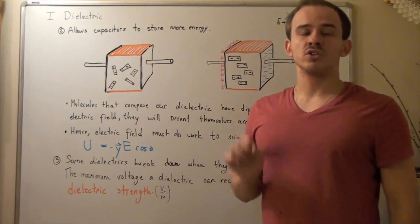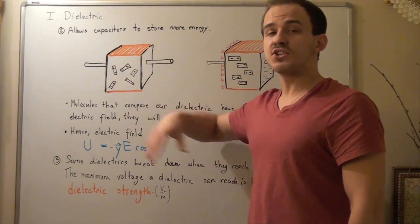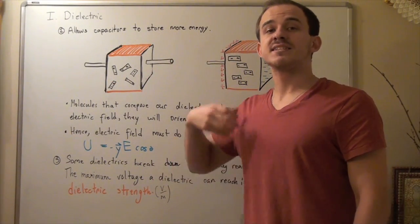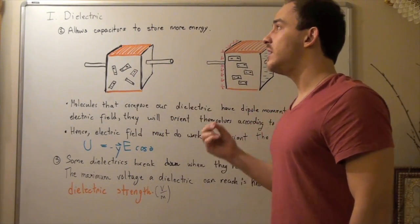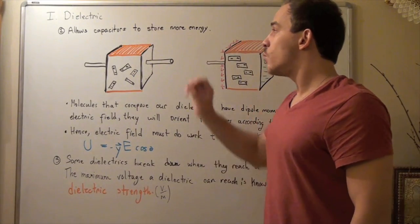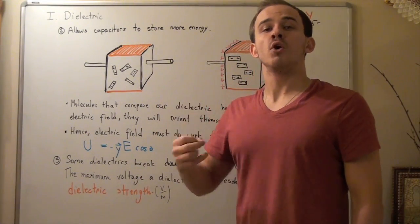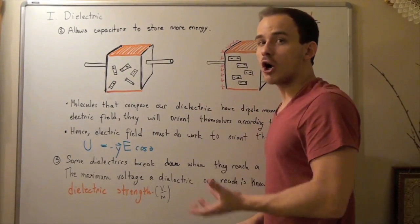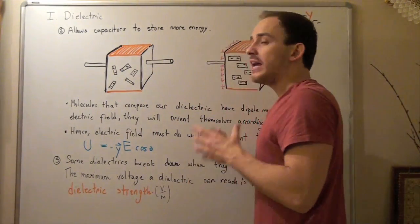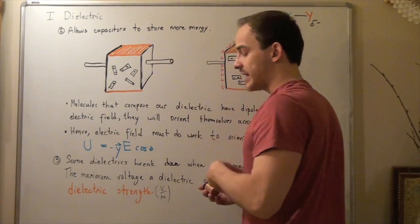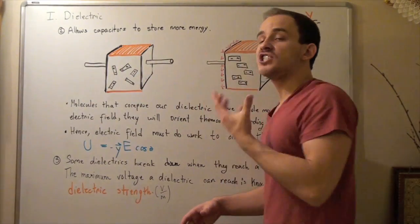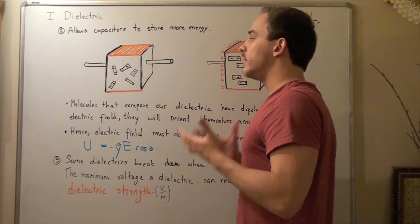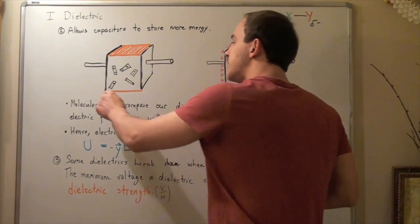Let's examine why dielectrics allow our capacitors to store more energy. In our first case, we have a parallel plate capacitor separated by some distance, completely filled with a dielectric — an insulating material. Within this dielectric, we have molecules that have a dipole moment. If the capacitor is not charged, we have not yet incorporated a battery, so both plates have a net charge of zero. With no charge separation, there is no electric field, and therefore no voltage difference between the plates.